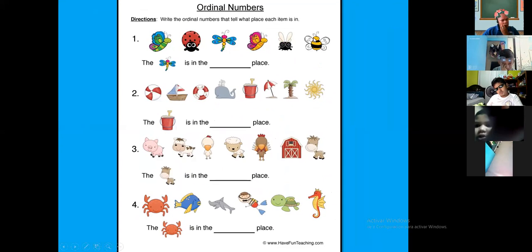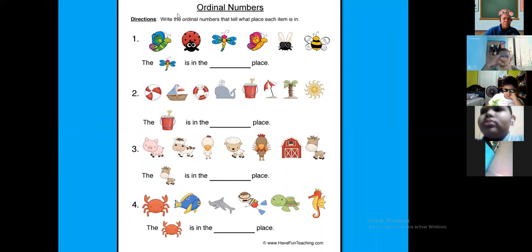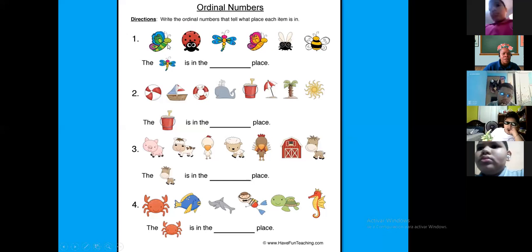Okay guys. Do you remember that part? We wrote the ordinal number and tell what place each item is in. For example, look at here. What animal is that? I don't remember what animal is that. This animal is in the 1st, 2nd, 3rd. Libélula.